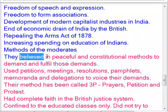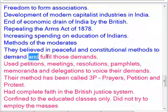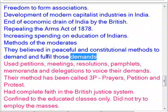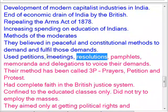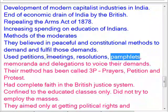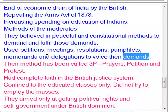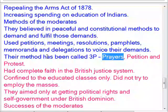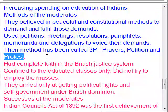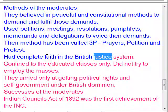Methods of the moderates: they believed in peaceful and constitutional methods to demand and fulfill those demands. They used petitions, meetings, resolutions, pamphlets, memoranda, and delegations to voice their demands. Their method has been called the 3P method — prayers, petition, and protest. They had complete faith in the British justice system.